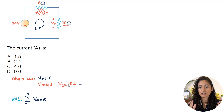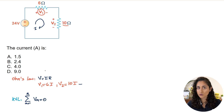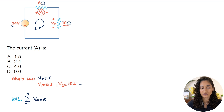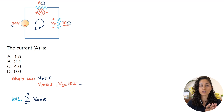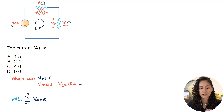KVL states that the sum of all voltages around any closed loop in a circuit must equal zero. Two things to keep in mind when applying it: first, it must only involve voltages. Second, when going from negative to positive that is a negative voltage, and when going from positive to negative that is a positive voltage.